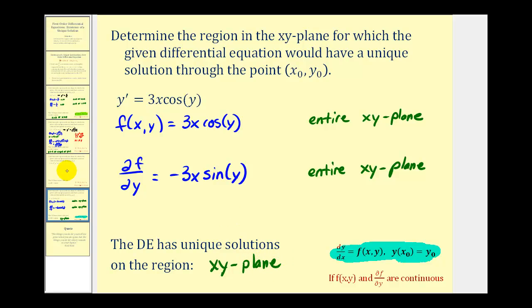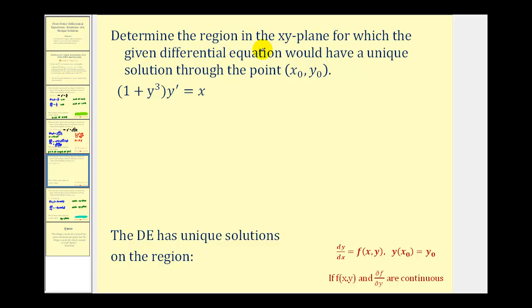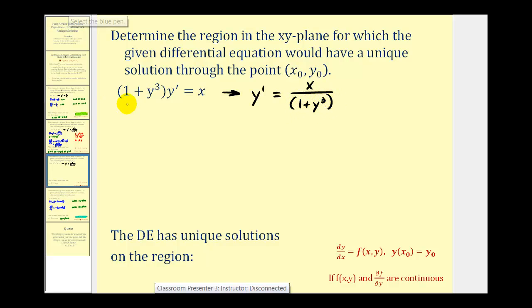Let's take a look at another example. Our goal is to find the region in the xy plane for which the given differential equation has a unique solution through the given point. Notice this differential equation is not in standard form, so our first step is to divide both sides by the quantity (1 + y³). This gives us y′ = x/(1 + y³), which means f(x,y) = x/(1 + y³).